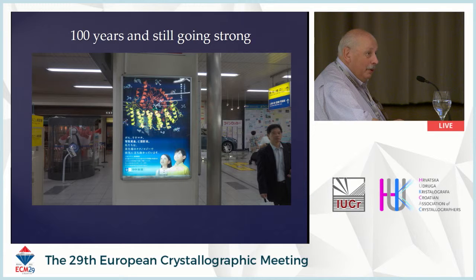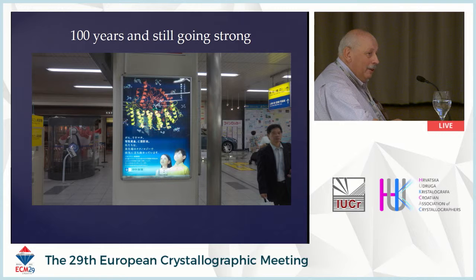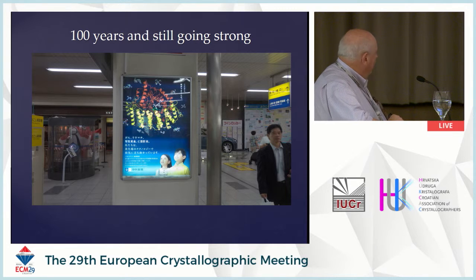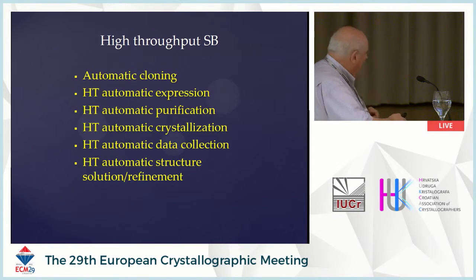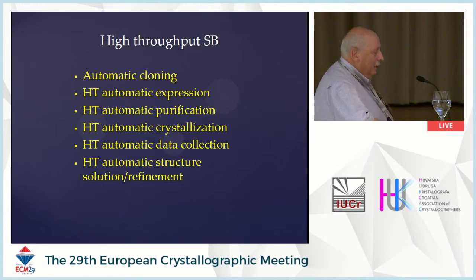Protein crystallography is very important. This is a slide from Hiroshima Shinkansen Station — an advertisement of one of the Japanese pharmaceuticals, a small pharma company. As you see, protein structure is something which at least stops people in front of that poster. What is the current situation with structural biology? We have everything automatic: automatic cloning, high throughput automatic expression, and so on.